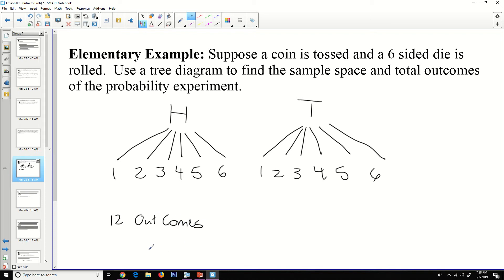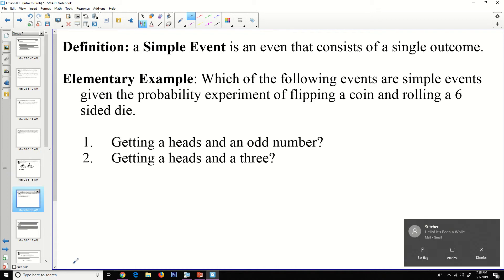And so the sample space has these 12 outcomes. It'll be heads one, heads two, heads three, heads four, and then all the way through six, tails one, tails two, all the way through six.